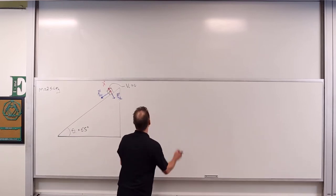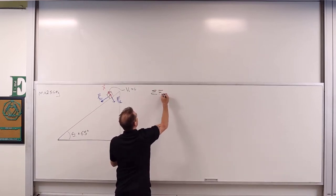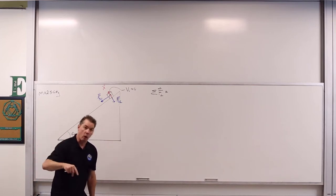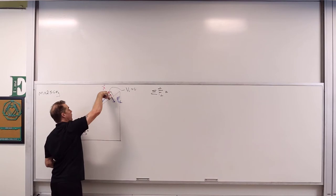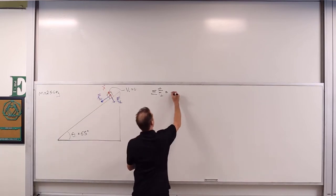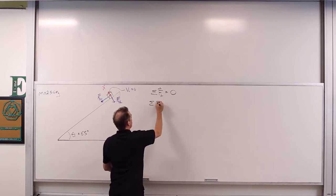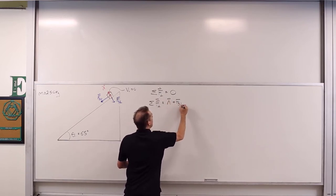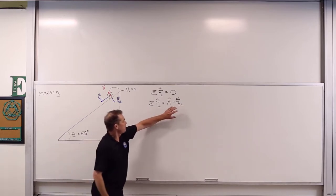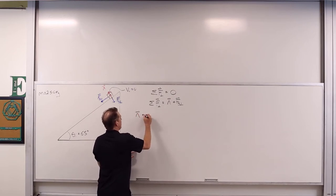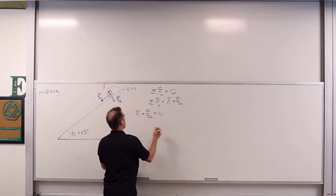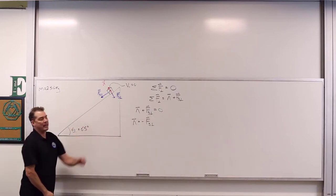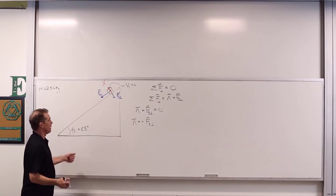The net force perpendicular to the incline produces the acceleration of the mass perpendicular to the incline, which must be equal to zero, because this object isn't accelerating perpendicular to the surface — there's no motion perpendicular. The net force perpendicular is composed of the normal force plus the perpendicular component of gravity, so N + Fg_perp = 0, meaning N = −Fg_perp.